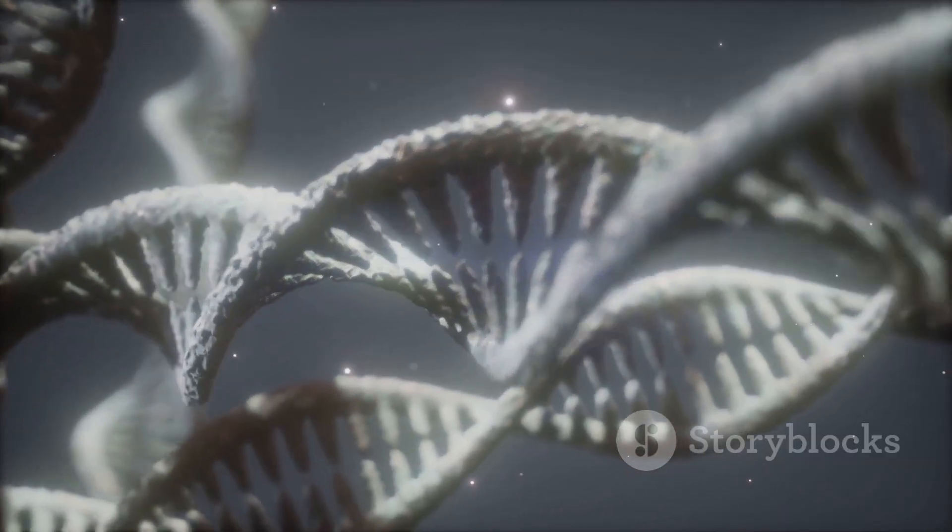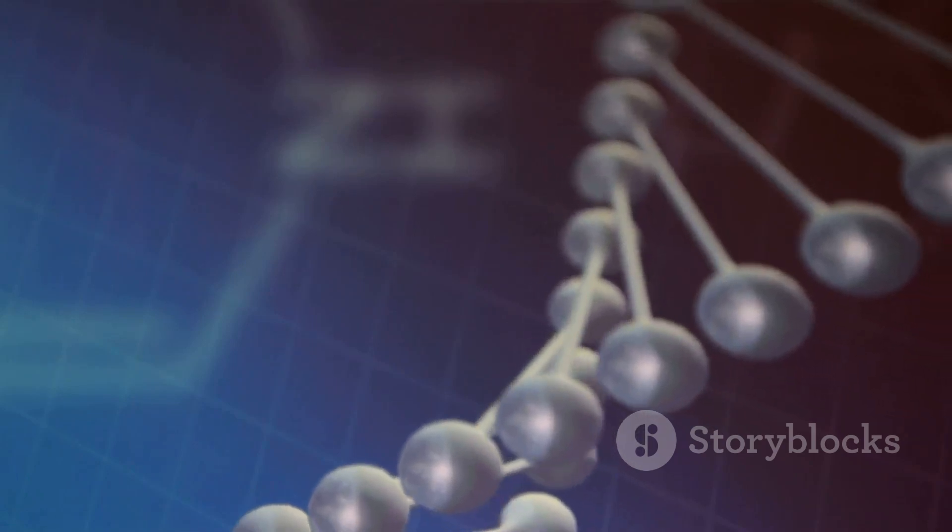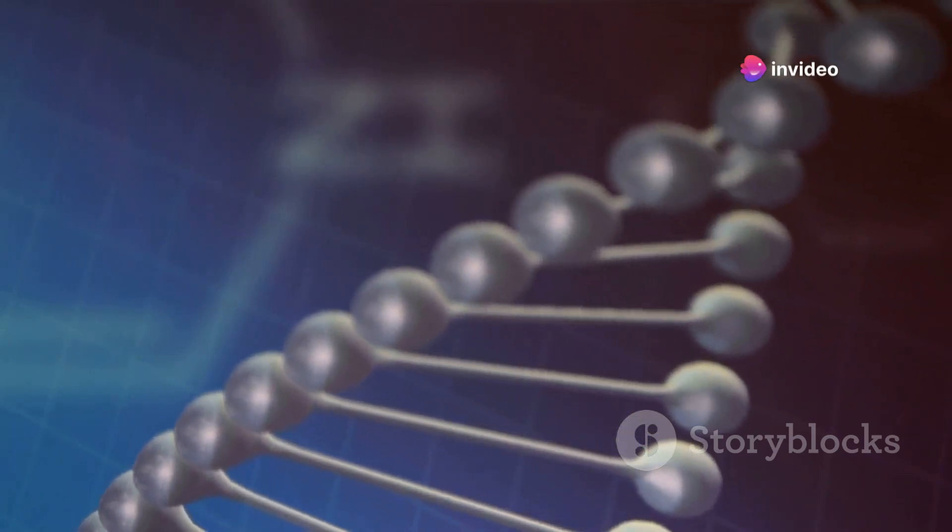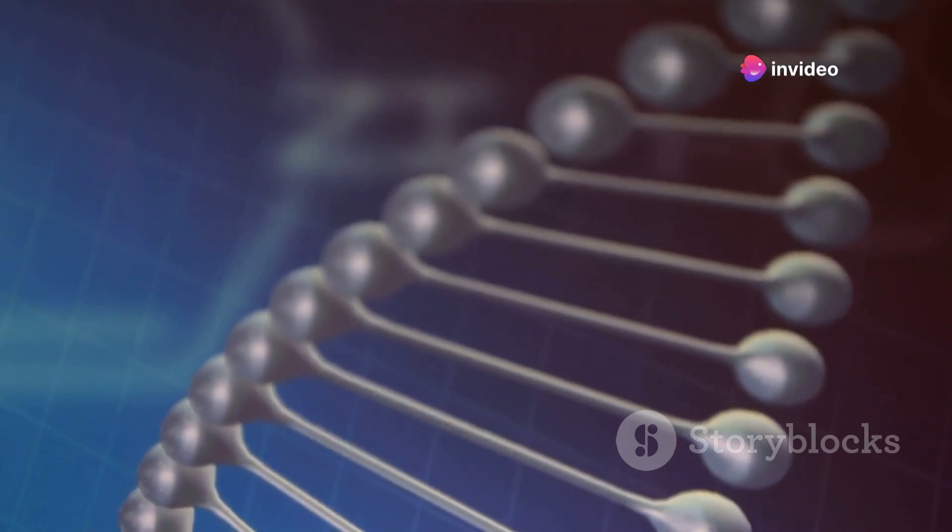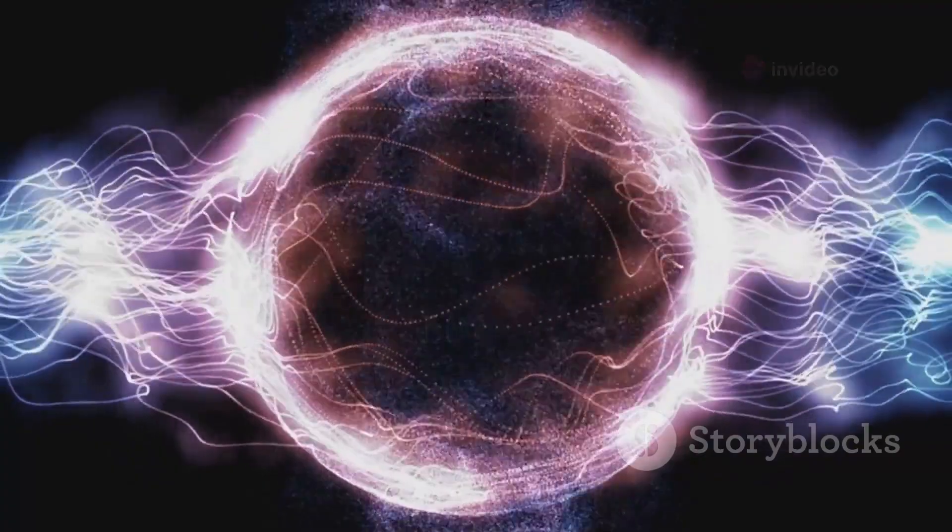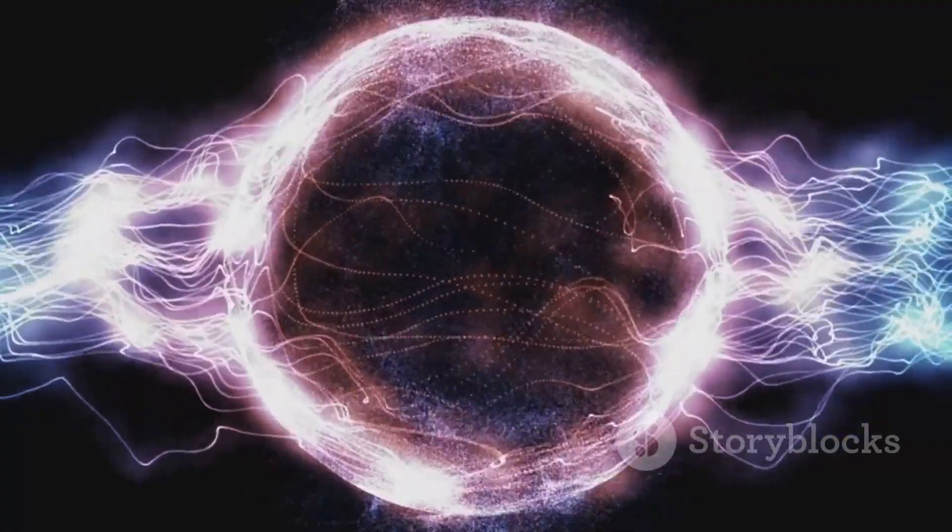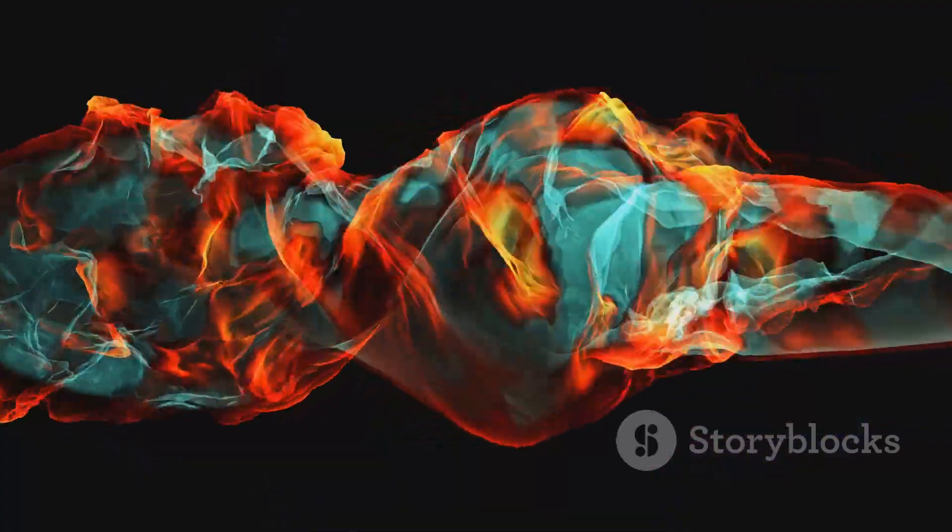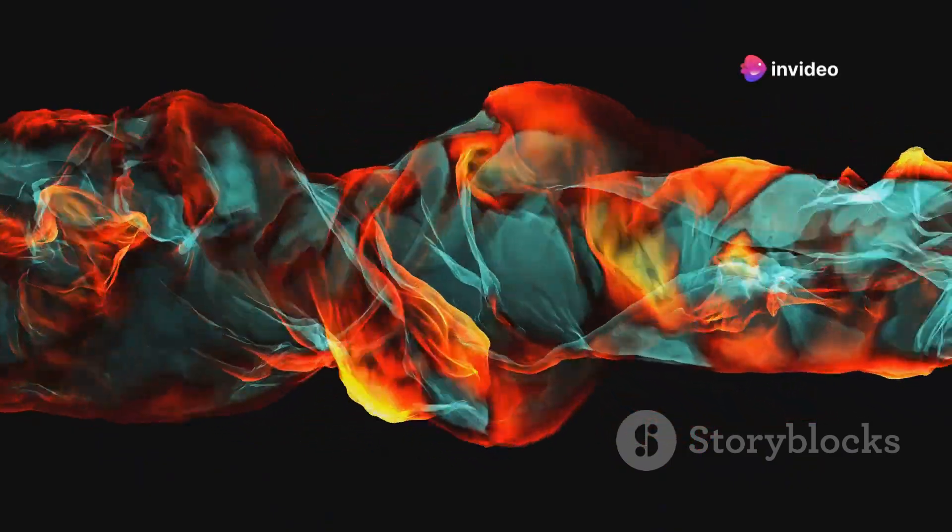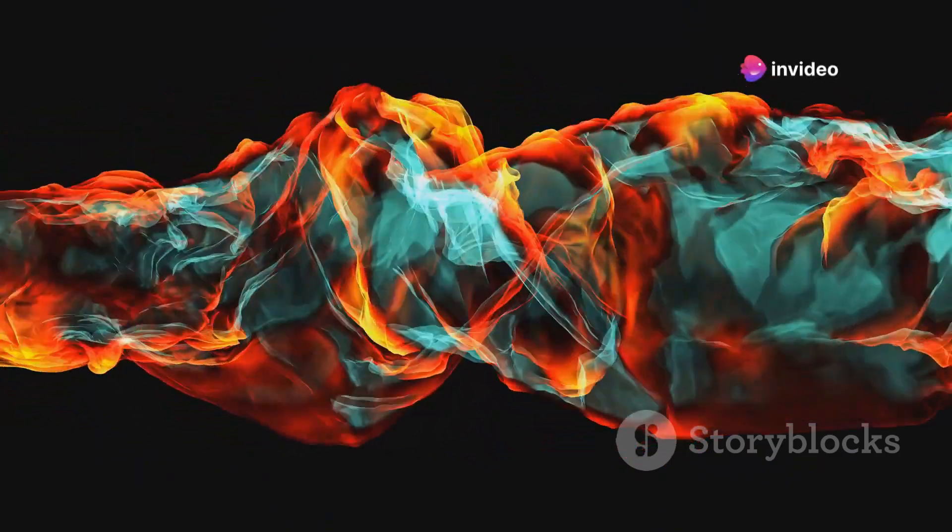ATP is composed of three main components: adenine, a nitrogenous base; ribose, a sugar molecule; and three phosphate groups linked together like a chain. The bonds between these phosphate groups are like tightly wound springs, storing a significant amount of energy. When a cell needs energy, it breaks one of these bonds, releasing the stored energy and forming adenosine diphosphate, or ADP.